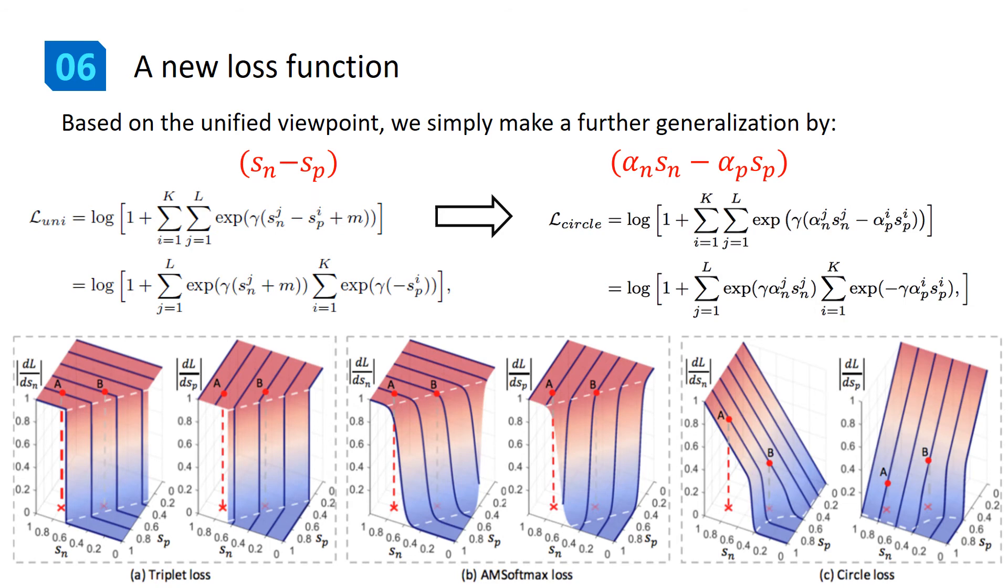The above analysis becomes more explicit when we compare the gradients of this loss function. In summary, by generalizing s_n minus s_p to alpha_n s_n minus alpha_p s_p, we obtain a more flexible optimization approach towards a more definite convergence.